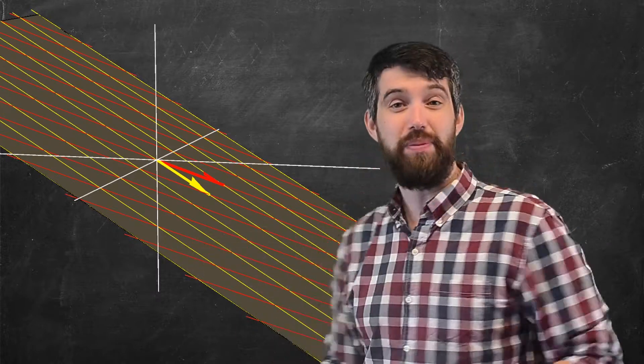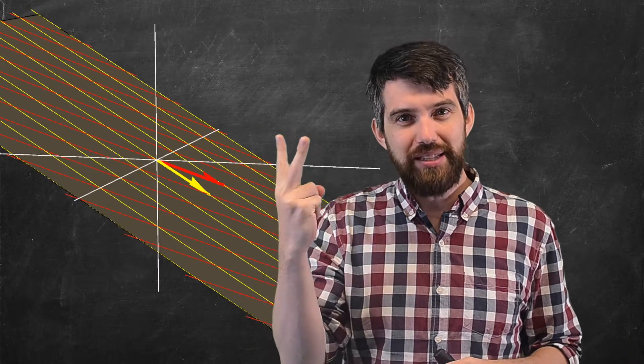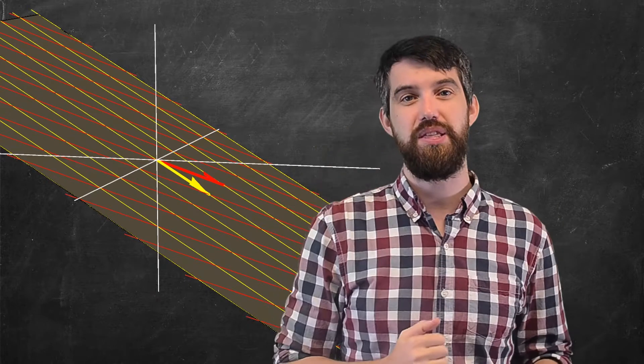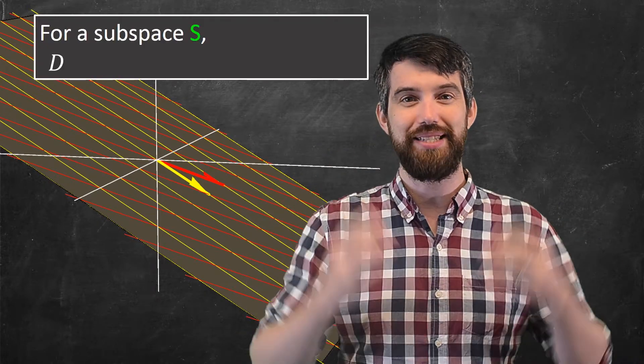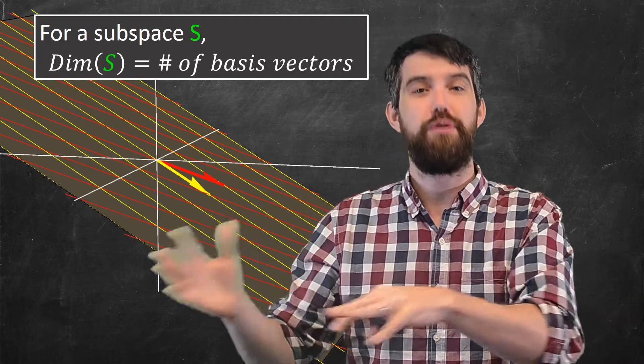Now, we would look at a plane and we would normally say, well, duh, it's dimension 2. But it also has this property that's got these two different basis vectors. So why don't we define that to be the notion of dimension? If I have a particular subspace S, then the dimension is defined to be the number of basis vectors.